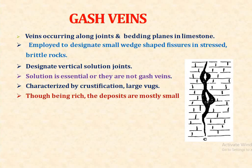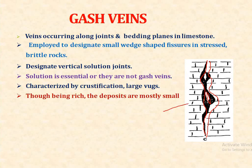Gash veins occur along joints and bedding planes in limestone. The term is employed to designate small waist-shaped pressure-stress brittle deposits, and also to designate vertical solution joints. Solution is essential; otherwise they are not gash veins. They are characterized by crustification and large vugs, which are open spaces in the cavity. Though being rich, the deposits are mostly small.